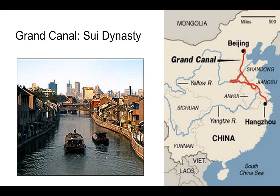Several empires took a very active role in developing the economy and infrastructure of their nation to improve trade. One specific example you must know for this exam is the Grand Canal in China, constructed during the Sui Dynasty — the first dynasty of the post-classical period. You can see a picture of what the Grand Canal looks like today, and how important it was in connecting major cities in China, including the major trade port city of Hangzhou. This was done on the scale of the Great Wall, so it's huge — kind of a big deal.